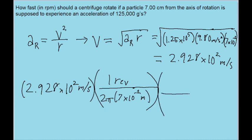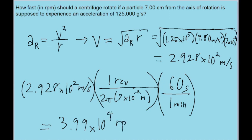We also want to convert from seconds to minutes. So there are 60 seconds in 1 minute, so we also multiply it by this factor to convert from minutes to seconds. And so if you put this into your calculator, you find a speed of 3.99 times 10 to the power of 4 revolutions per minute, rpm.